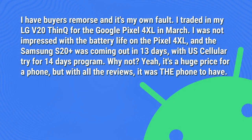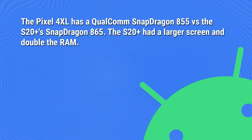So Sean writes: I have buyer's remorse and it's my own fault. I traded in my LG V20 ThinQ for the Google Pixel 4XL in March. I was not impressed with the battery life on the Pixel 4XL, and the Samsung S20 Plus was coming out in 13 days with US Cellular's 14-day program. But with all the reviews, it was the phone to have. The Pixel 4XL has a Qualcomm Snapdragon 855 versus the S20 Plus' Snapdragon 865. The S20 Plus had a larger screen and double the RAM.